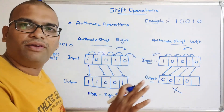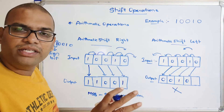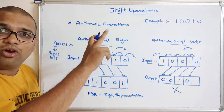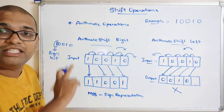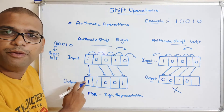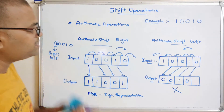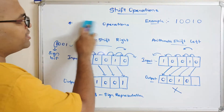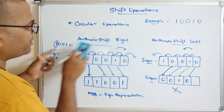You will not see arithmetic shift left in any operations or calculations. Coming to arithmetic operations, only arithmetic shift right is possible — that means copying the MSB bit of the input to the MSB bit of the output. Now let us move on to circular operations.